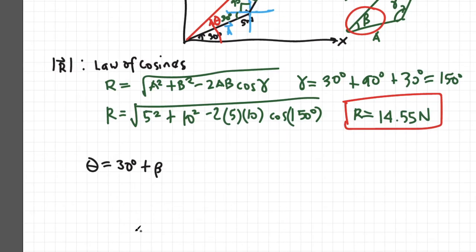But how do we get beta? So this is where the law of sines comes in. We get beta by using the law of sines.